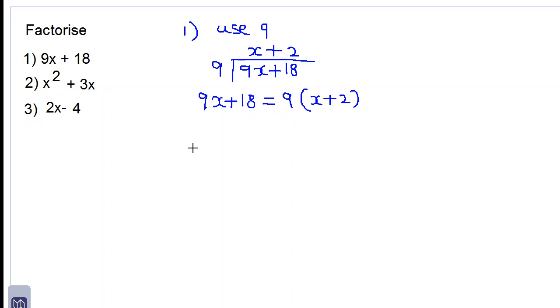Let's look at number 2, x squared plus 3x. We are using the HCF as x because x can go into x squared and x can go into 3x without leaving remainders. So we are dividing x squared plus 3x by x.